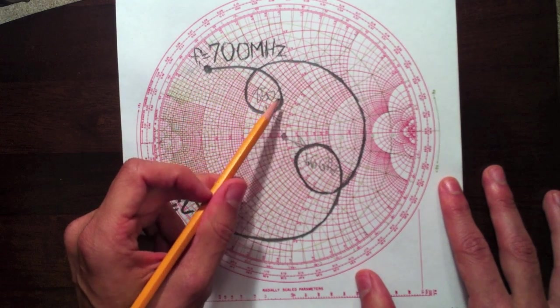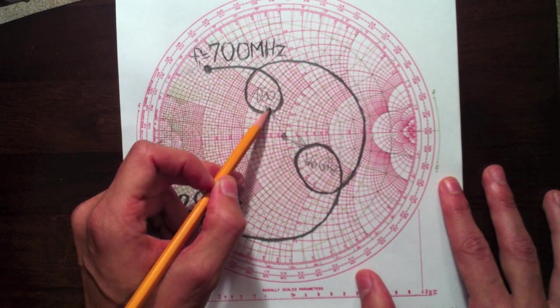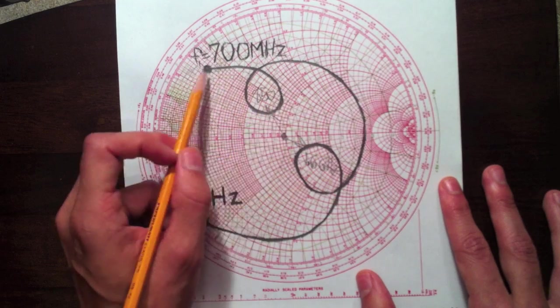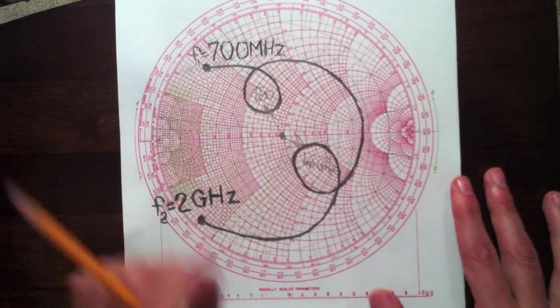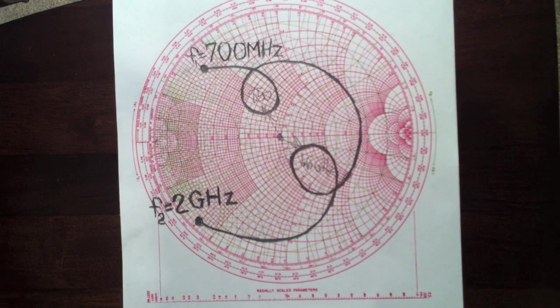So impedance matching on the Smith chart is how do we move the impedance of the antenna closer to the Smith chart. So looking at this on a network analyzer, we can see where the resonances are. And also the Smith chart just makes it very easy to visualize impedance matching.